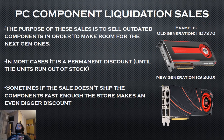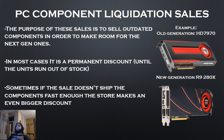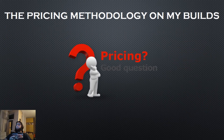PC component liquidation sales are another discount type. Their purpose is to sell outdated components to make room for next-gen ones. For example, if a store has many HD 7000 series cards and the R200 series comes out, the store runs a liquidation sale to clear inventory. This type of discount usually lasts until components run out, and if sales are too slow, the store may offer an even bigger discount.